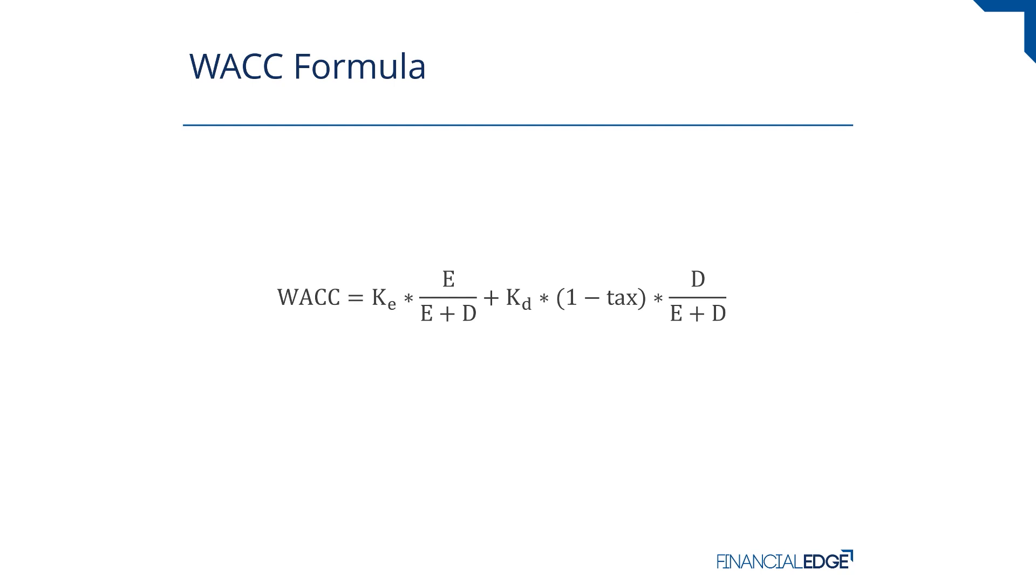Here we've assumed all of your funding comes from equity plus debt, so it's equity divided by 100% of your funding. If you had another source of funding, such as preference shares, we'd have to include that as well.